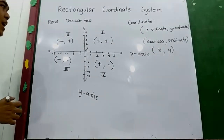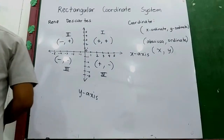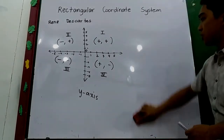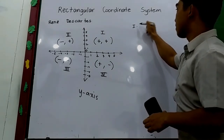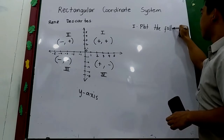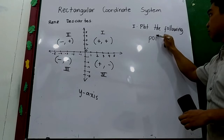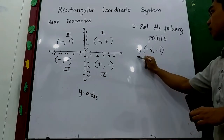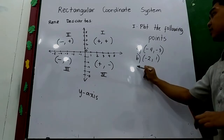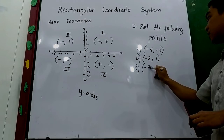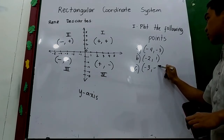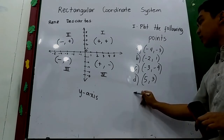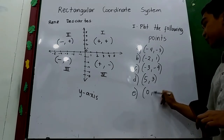Now let us try to locate the given points. What if your teacher asks you to plot the following points? A: negative 4, negative 3. B: negative 2, 1. C: negative 3, negative 4. D: 5, 3. And E: 0, 0.